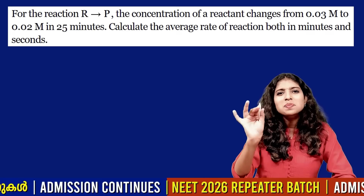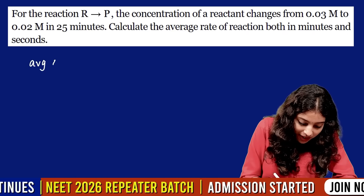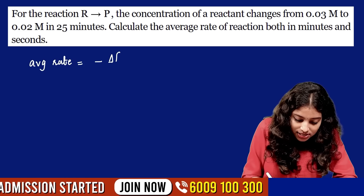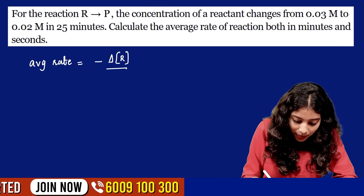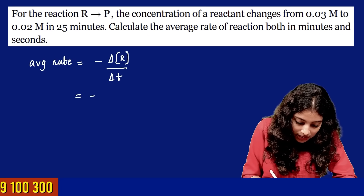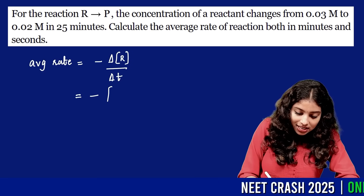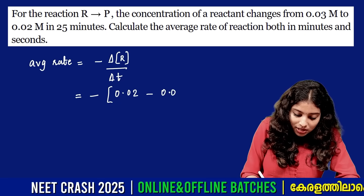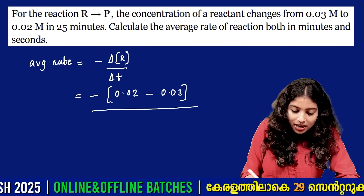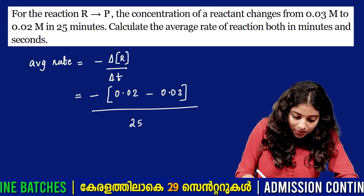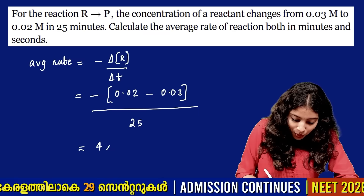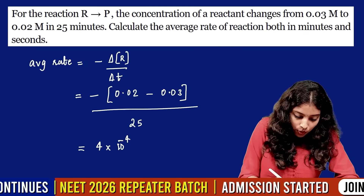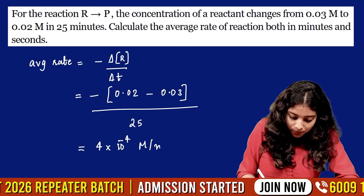This is a simple question. Average rate is equal to minus delta concentration of reactants divided by delta T. We take the change as 0.02, final minus initial, divided by time 25 minutes. We get 4 × 10⁻⁴ molar per minute.